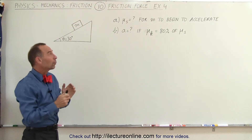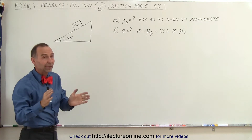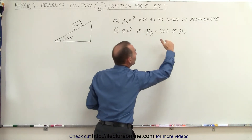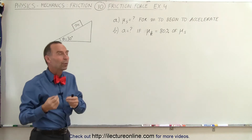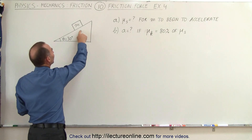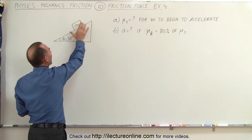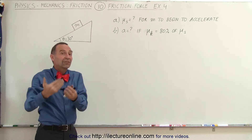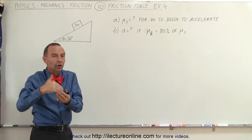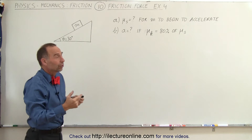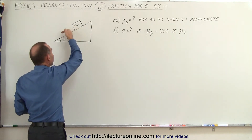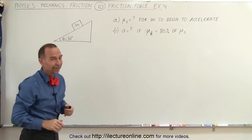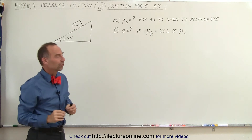Once we find out what that is — the condition is that we want m to begin to accelerate. In other words, what will be the value for mu sub s that will allow m to begin to accelerate down the incline, such that the net force is larger than zero? In other words, the force pulling m down the incline is greater than the opposing static friction force.